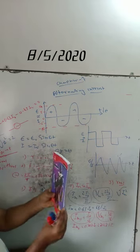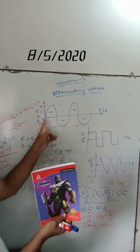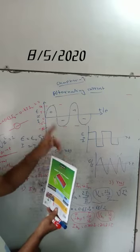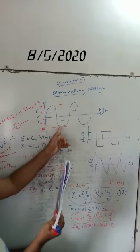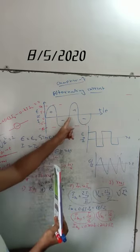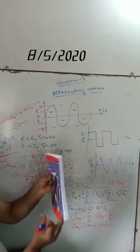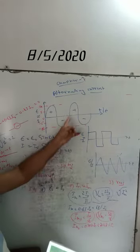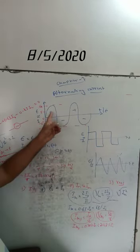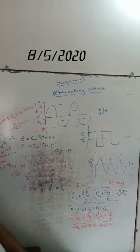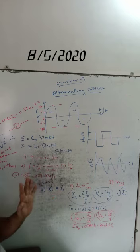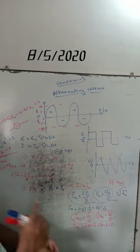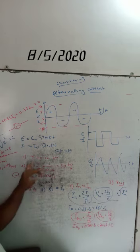One quarter rotation, then one half rotation, then three-quarter rotation, then one complete rotation of the armature in the magnetic field constitutes one complete cycle. This is the positive half cycle, this is the negative half cycle. This is the complete cycle. The time for one complete rotation of the armature in the magnetic field is also called the period of AC.